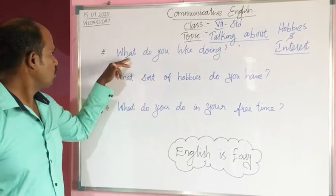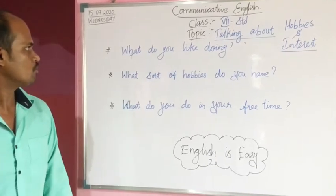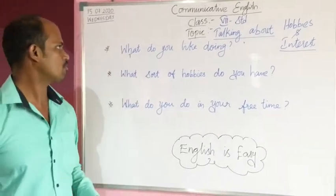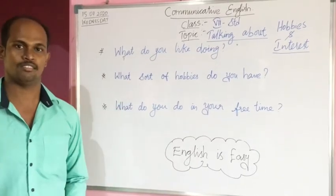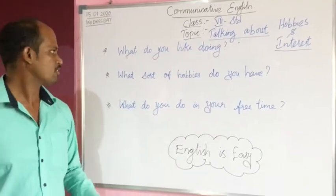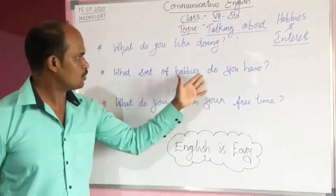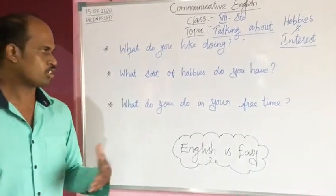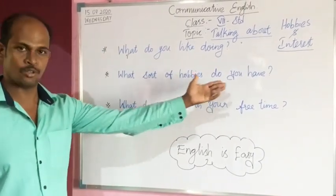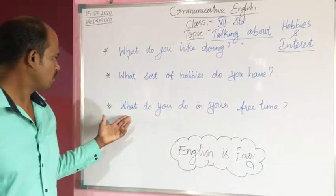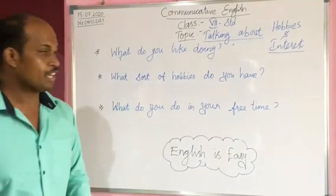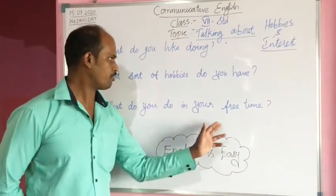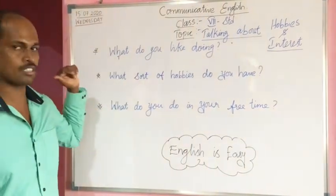First, the question is: what do you do? What do you like doing? That means what do you do at home and what do you like and enjoy doing? Second: what sort of hobbies do you have? We can ask what sort of hobbies and interests do you have? Third question: what do you do in your free time? We have three sets of questions.